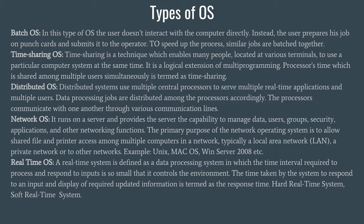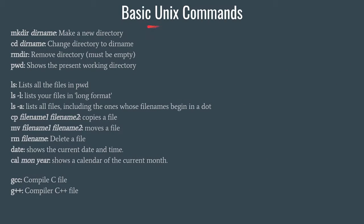Lastly, Real-Time OS. A real-time system is a data processing system in which the time interval required to process and respond to inputs is so small that it controls the environment. The time taken by the system to respond to an input and display the updated information is termed the response time — which is self-explanatory: it is the time required to generate a response. There are two types of real-time OS: hard real-time systems and soft real-time systems. I will not go into depth here, as you will study OS in detail later.